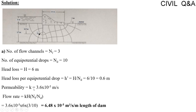The permeability of the soil is equal to 3.6 × 10⁻⁵ meters per second, which is used to calculate the flow rate per unit length of dam.